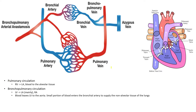In the right ventricle we have deoxygenated blood, and this deoxygenated blood is going to enter the pulmonary artery. Deoxygenated blood is blue. From the pulmonary artery it's going to meet with the alveolar capillaries of the lung and participate in gas exchange.